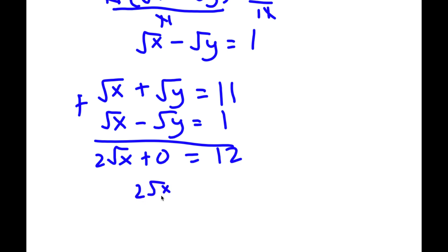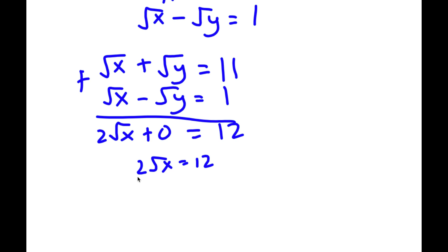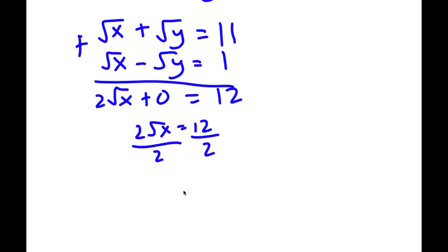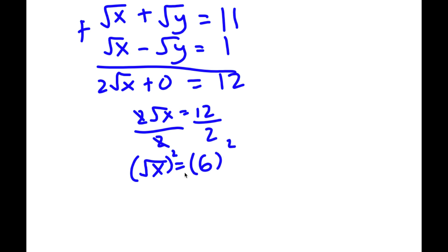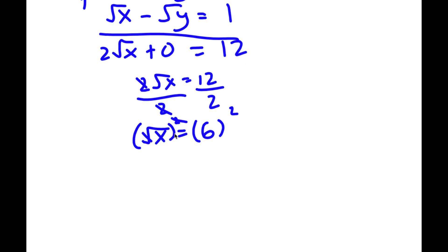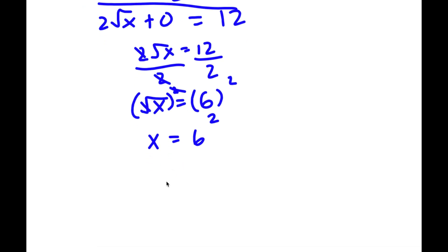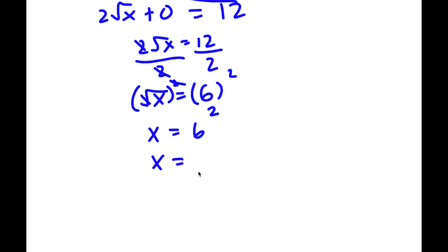So we have 2 root x is equal to 12. Now if I divide both sides by 2 to isolate x, I get the square root of x is equal to 12 divided by 2, which is 6. So we have the square root of x equals 6. To solve this, I'm going to square both sides. The square root and the power cancel out, so I have x is equal to 6 squared, and 6 squared is 36.